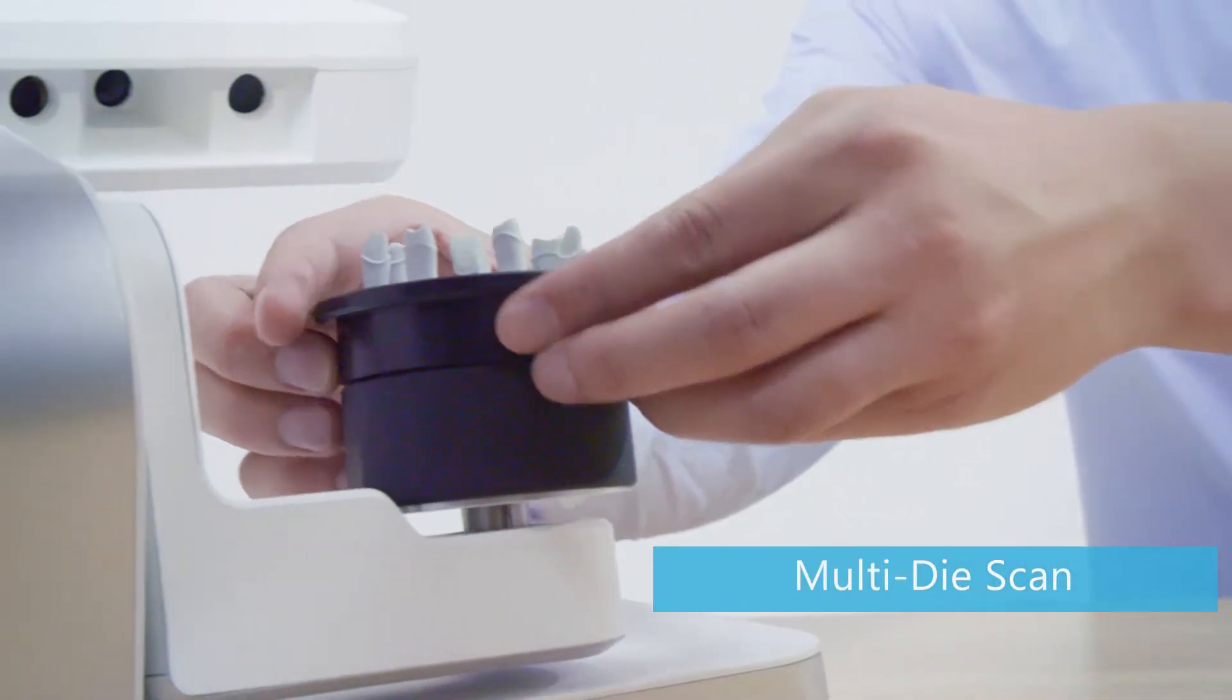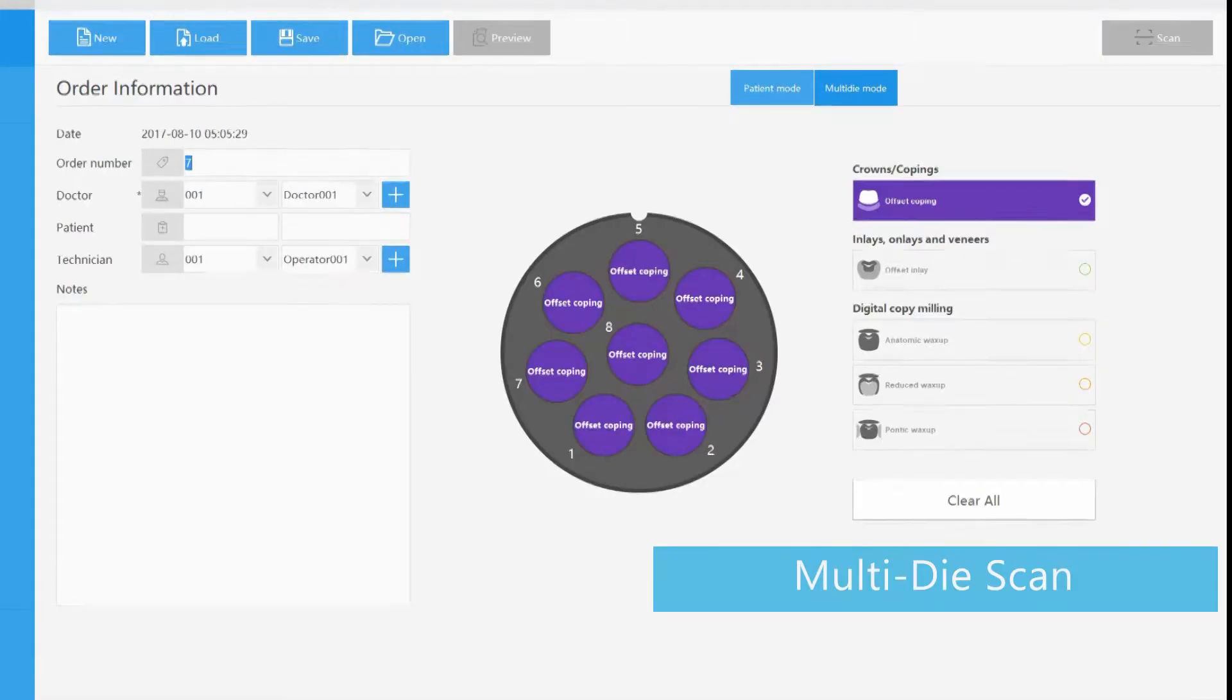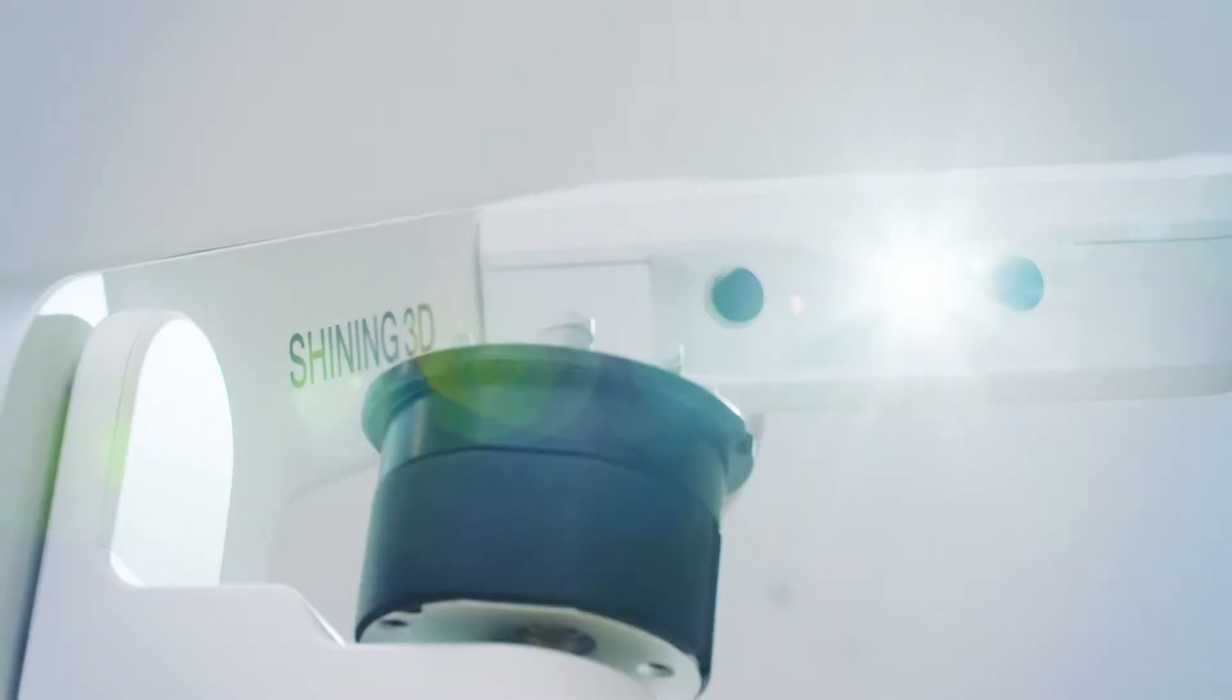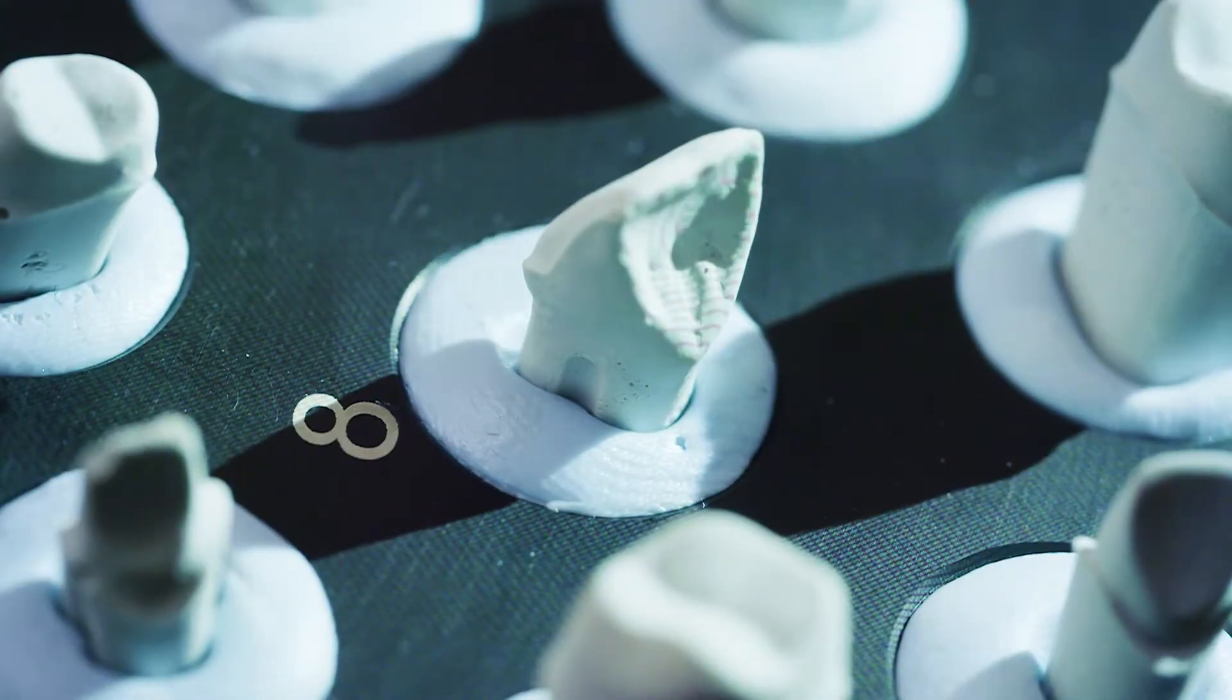Autoscan DS-EX comes with multi-die scan function. It can scan up to 8 dies simultaneously with fine details to increase your working efficiency.